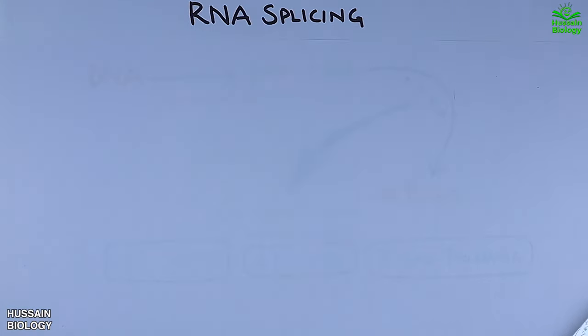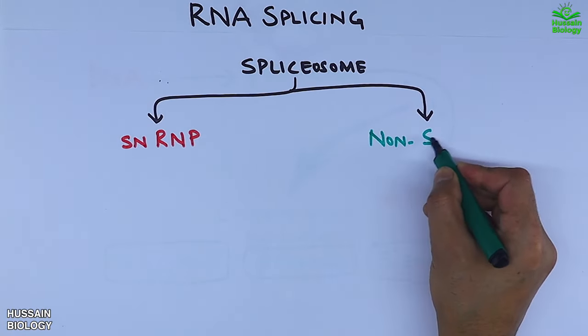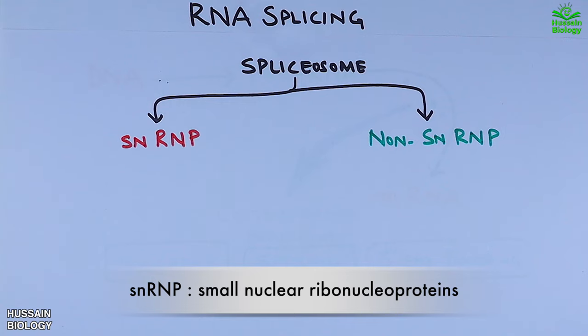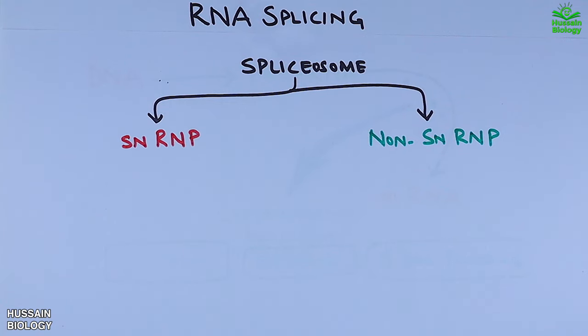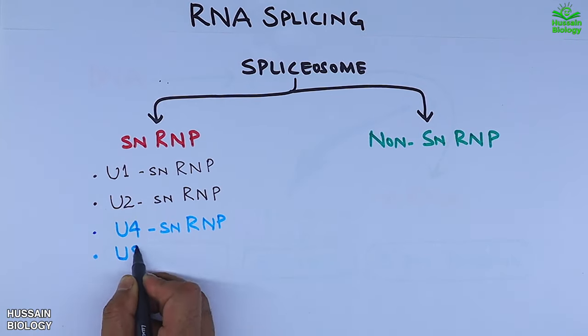First of all, we need spliceosome complex which is made up of SNRNP molecules and non-SNRNP molecules. The SNRNP stands for small nuclear ribonucleoproteins. The SNRNPs include U1 SNRNP, U2, U4, U5, and U6.